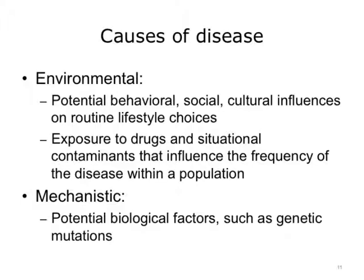What are some examples of both categories of disease causation? An example of a potential environmental influence on disease includes the recent oil spill in the Gulf, and also the downstream effects of the oil spill on the food chain for the population living within that region. An example of potential mechanistic or biological causes for disease includes genetic mutations, such as the BRCA1 or BRCA2 gene mutations that increase an individual's lifetime risk for developing breast, ovarian, and other cancers.